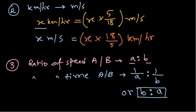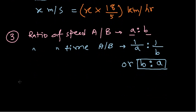This is very important: the time taken is always inversely related to speed. If you have higher speed, you take less time to reach there; if you take more time, your speed is low. That's why the speed ratio and the time ratio are inverse of each other.